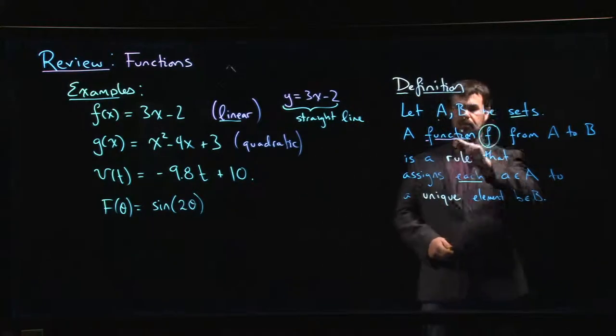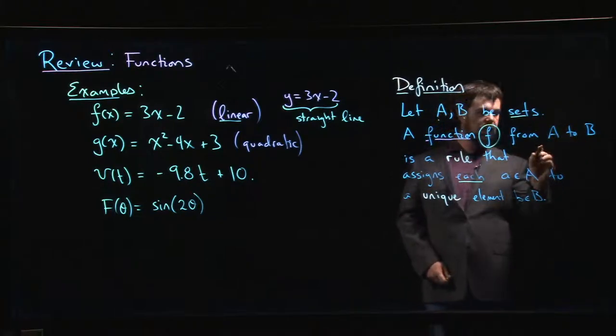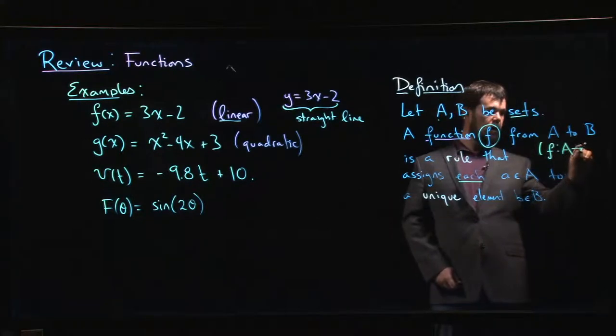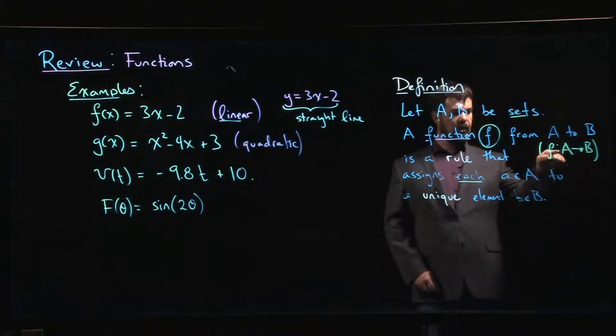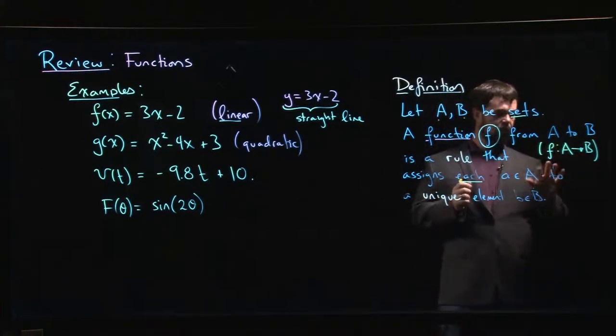Now there are a few other things that we can add. One of the ways that you might denote the fact that this function goes from a set A to a set B, you might write this by saying I'll write F for the letter that represents your function, and a colon and an arrow to B. So you'd read that as F goes from A to B, or F is a function from A to B.